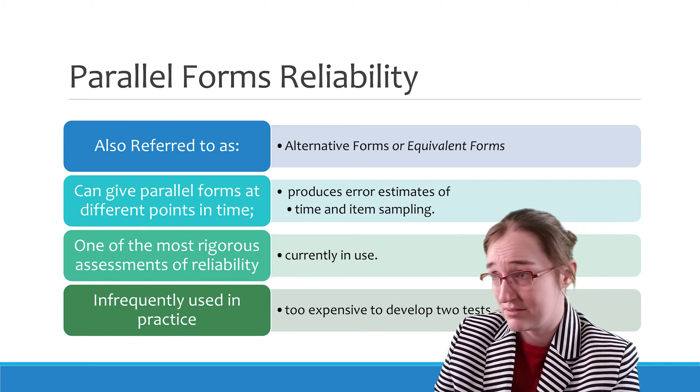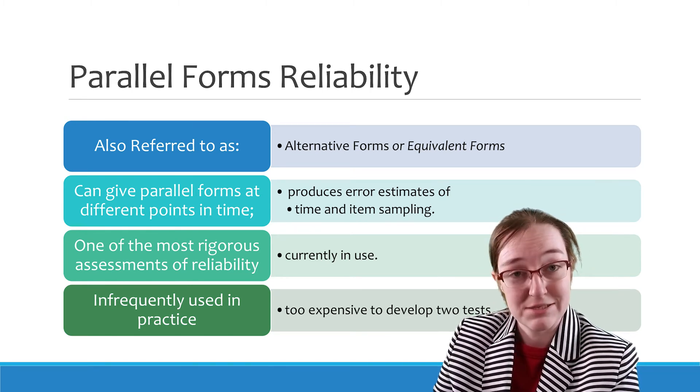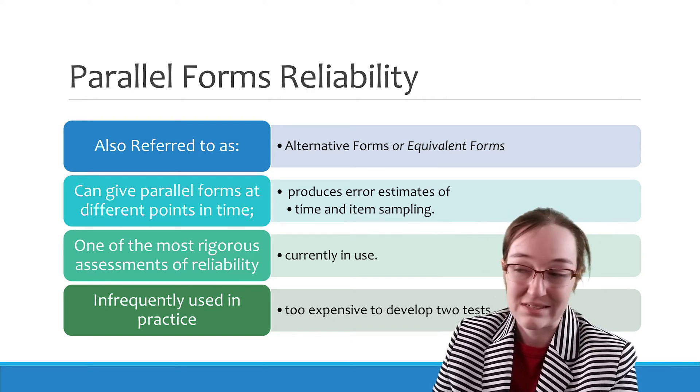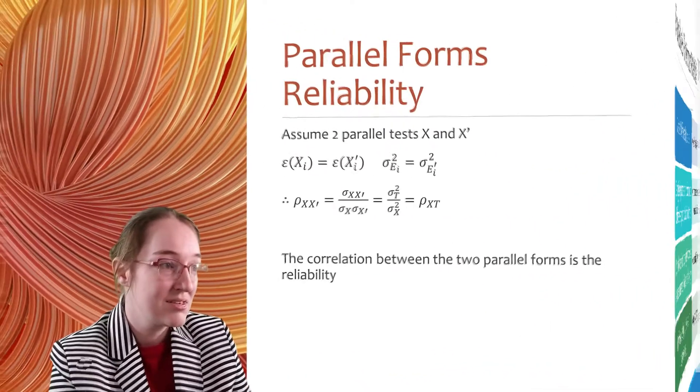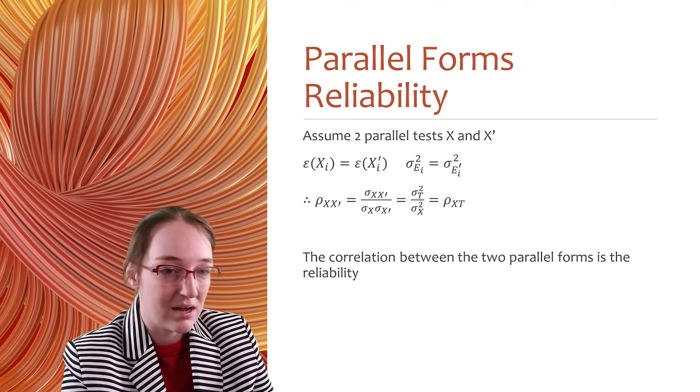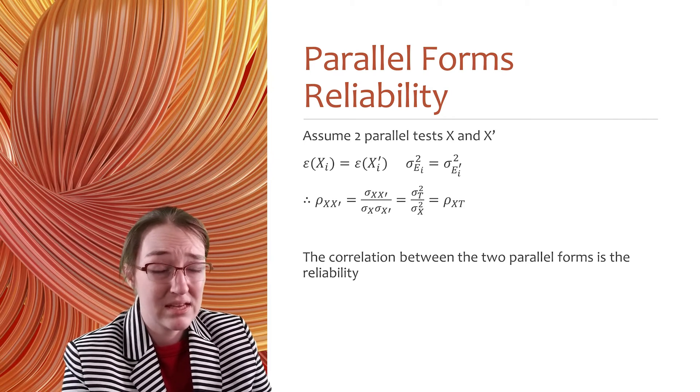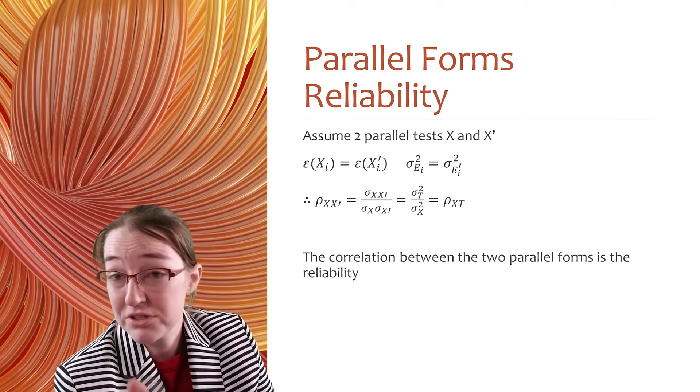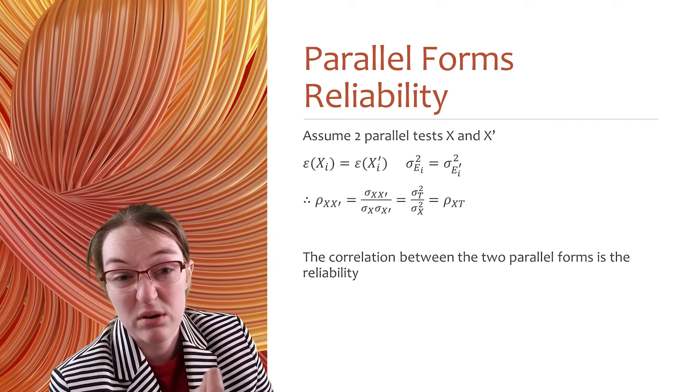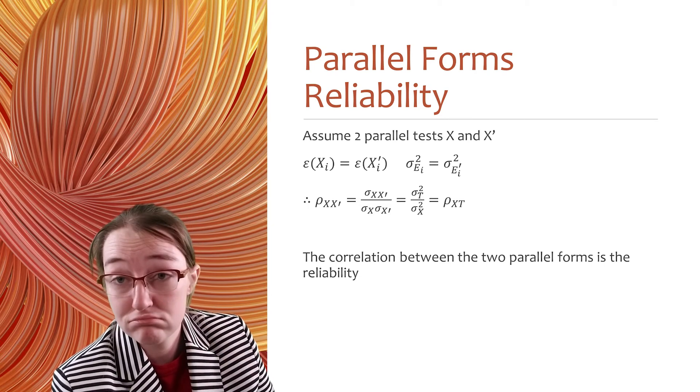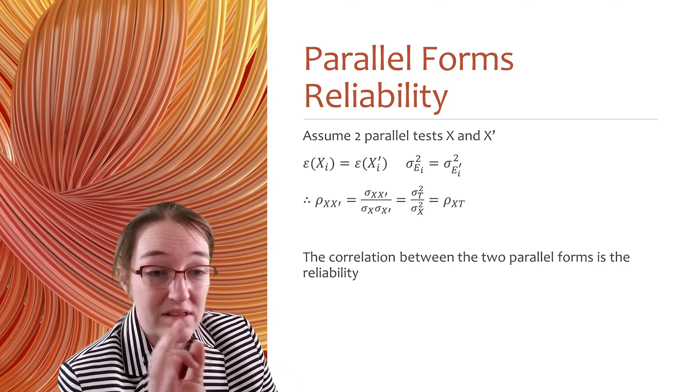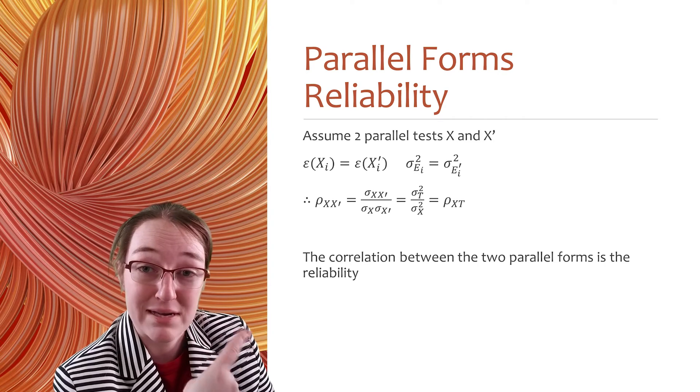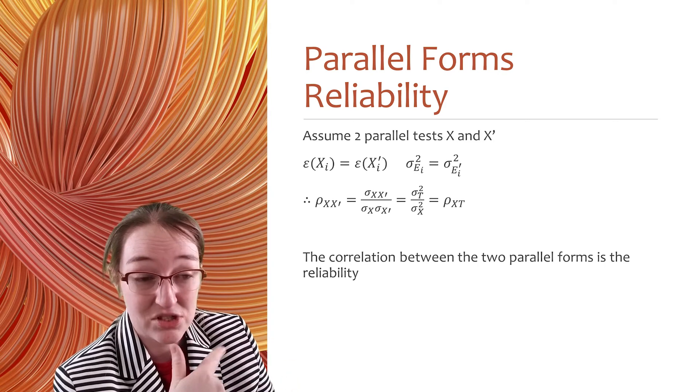And requires a lot of trained statisticians as well as subjects to get those evaluations. So, we can obtain estimates to alternative form reliability and parallel form reliability, they're similar in two main ways compared to estimates of test-retest.